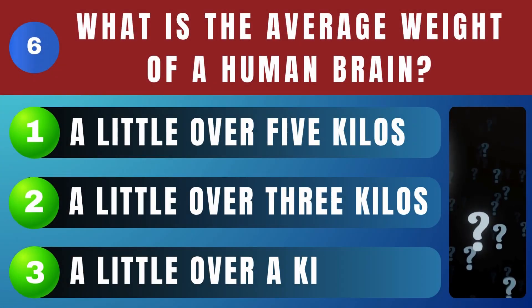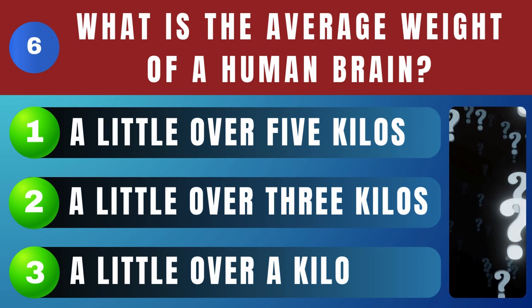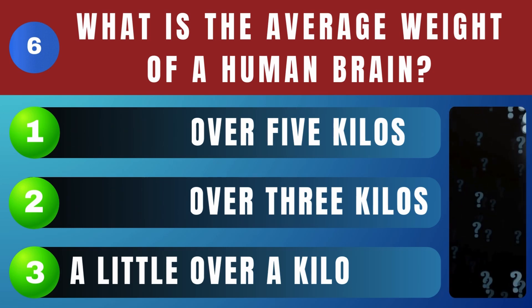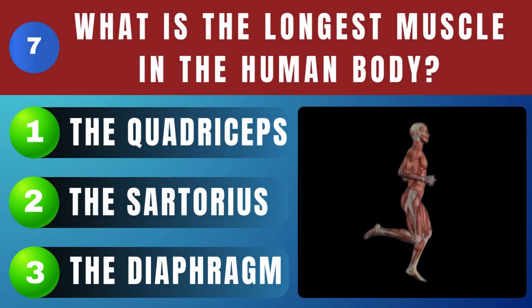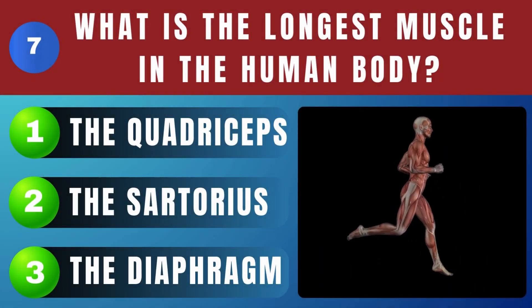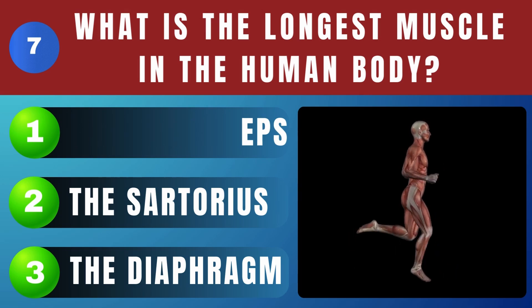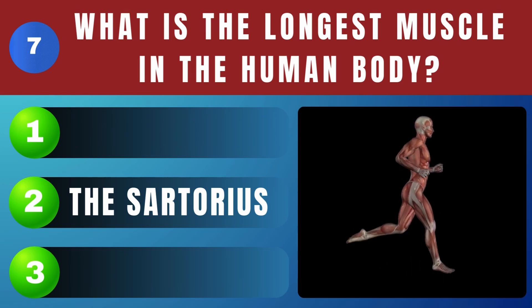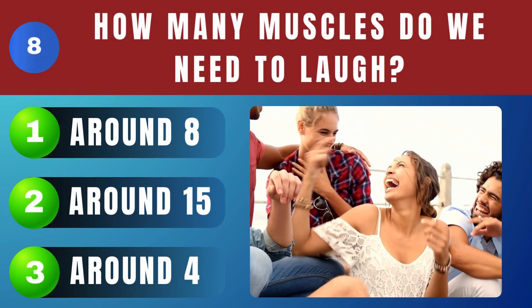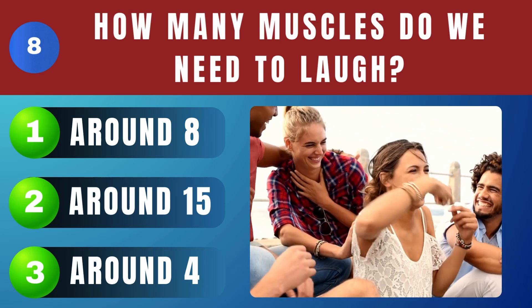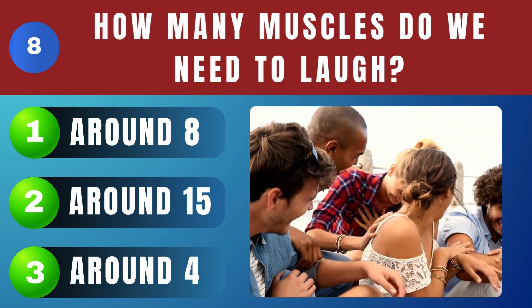What is the average weight of a human brain? A little over a kilo. What is the longest muscle in the human body? The sartorius. How many muscles do we need to laugh? Around 15.